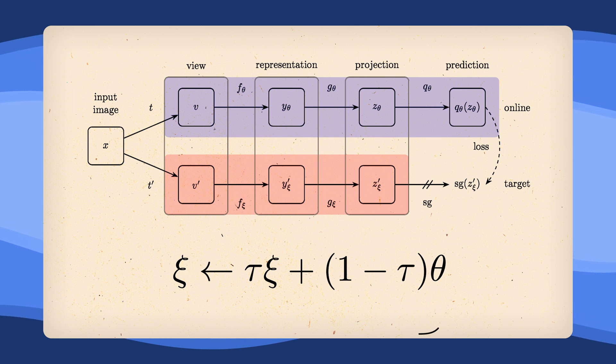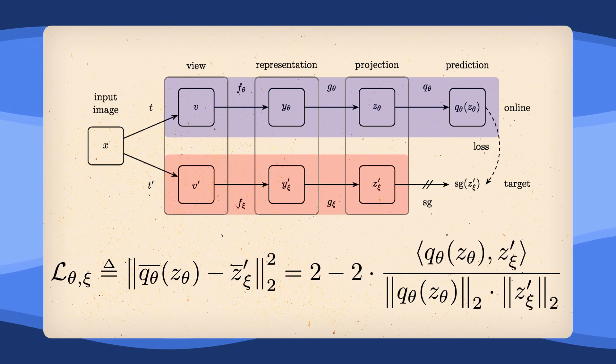The authors, for example, set tau to 0.99, which means they only change the target parameters slightly by adding the online parameters scaled by 0.01. Since we finally don't have any contrastive examples anymore, we also don't need a contrastive loss. The loss for BYOL is simply the mean square error between the normalized predictions and the normalized target projections.